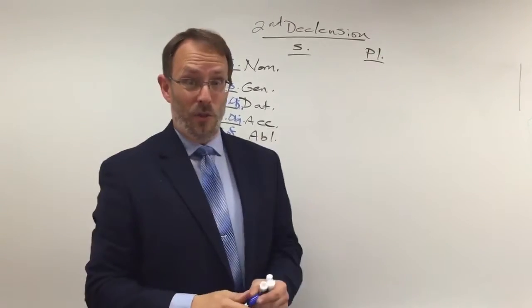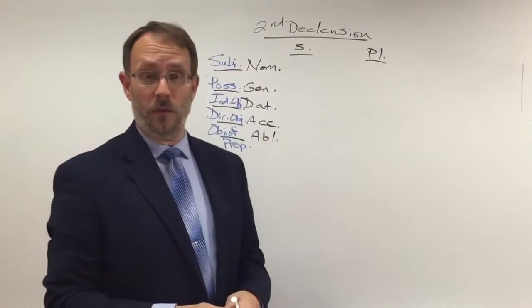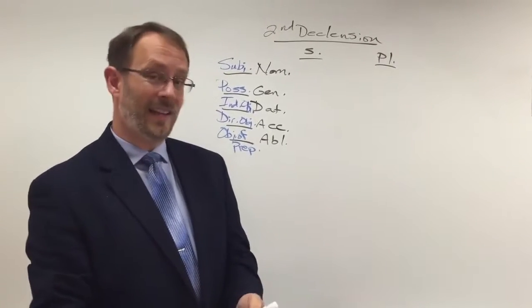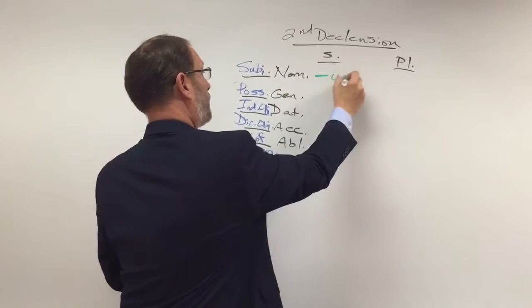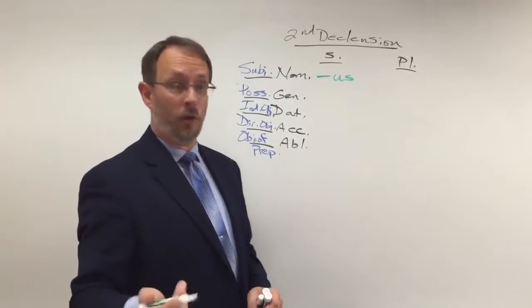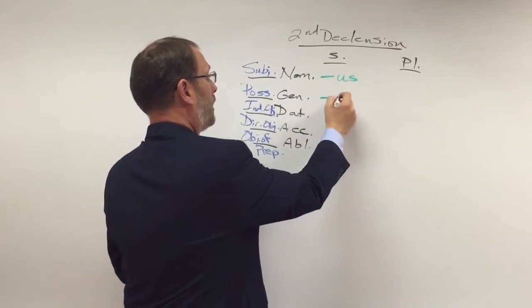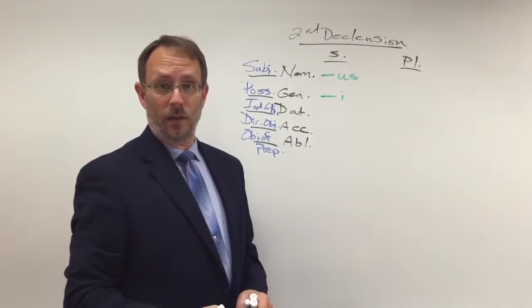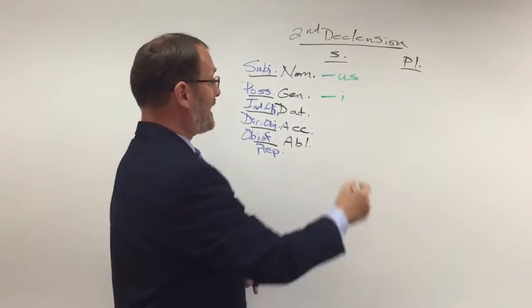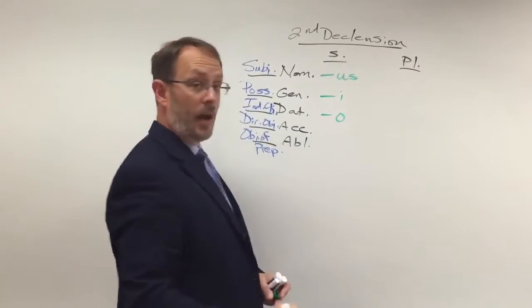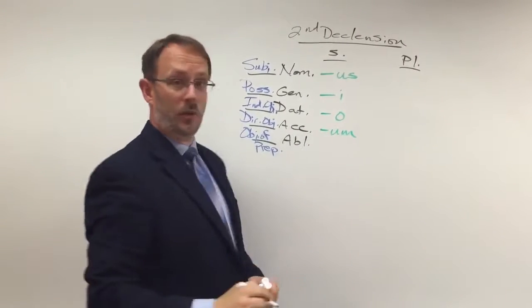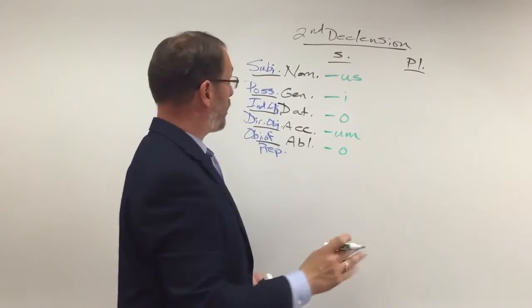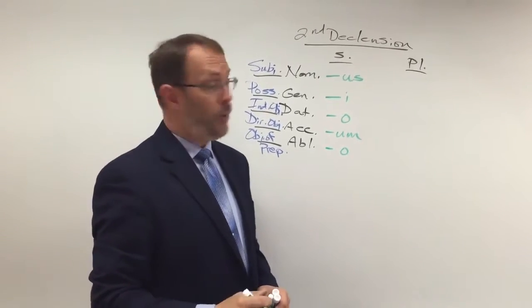Now we know what all those endings would be for those cases in first declension, but what do they look like in second declension? Well, if we've got a subject and there's only one of it, in second declension it ends with us. In genitive singular for possession, it ends with that long I pronounced E. Indirect object dative is O. Accusative, direct object is UM. And ablative, object of preposition is O.